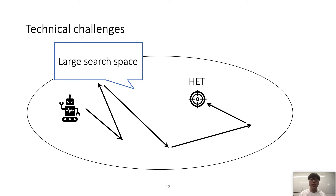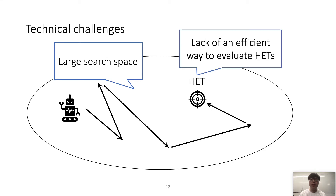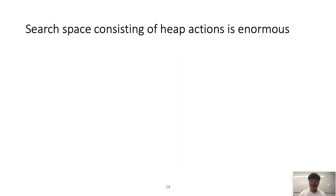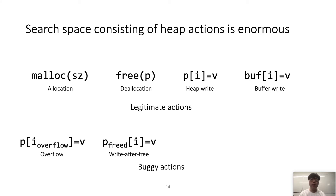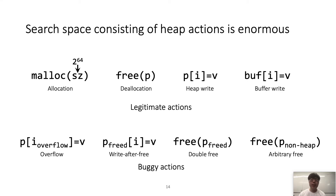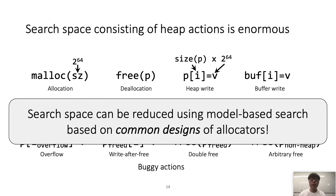The search space of a heap exploitation technique is very large. We have legitimate actions such as allocation, deallocation, heap write, and buffer write. We also need to simulate bug actions such as overflow, write-after-free, double free, and arbitrary free. Each parameter also has a large search space. For example, in allocation we have 2^64 candidates, and heap write space is even larger, with size p times 2^64 candidates. To handle this, Rkip reduces the search space using model-based search based on the common designs of allocators.